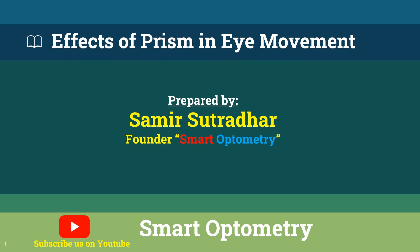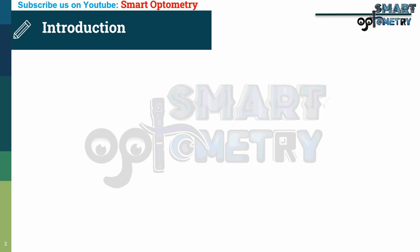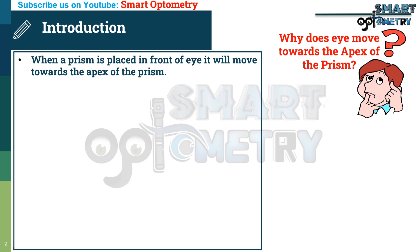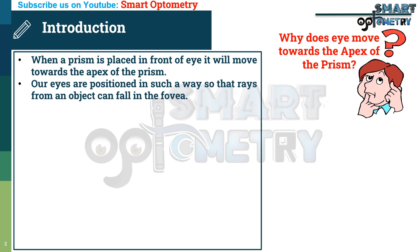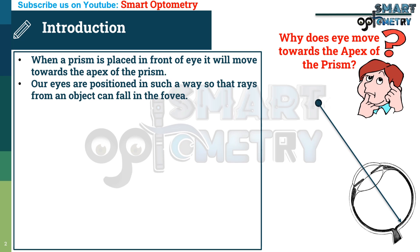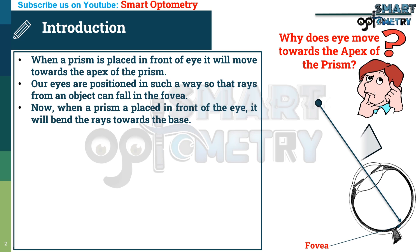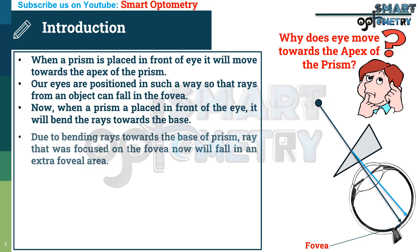Today I will discuss the effects of prism on eye movement. When a prism is placed in front of the eye, it will move towards the apex of the prism. You might be thinking why the eye moves towards the apex. Our eyes are positioned so that rays from an object can fall on the fovea. When a prism is placed in front of the eye, it will bend the rays towards the base due to its optical properties.